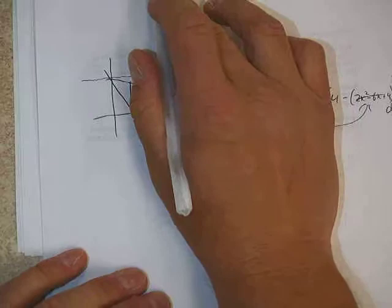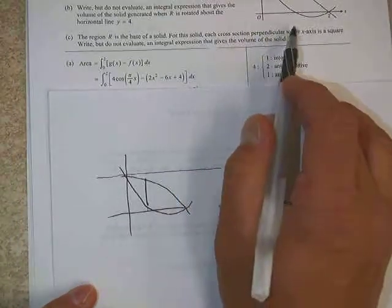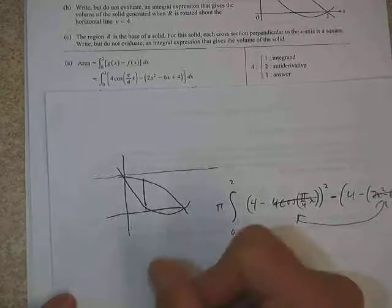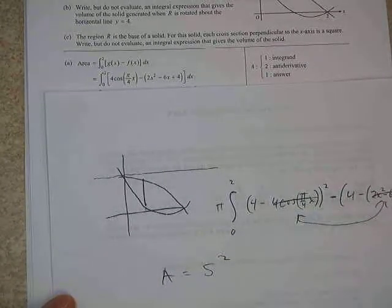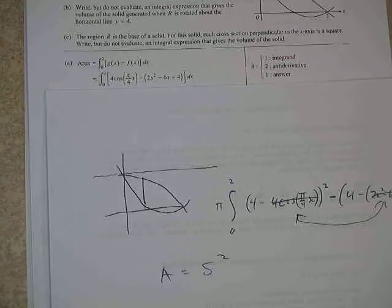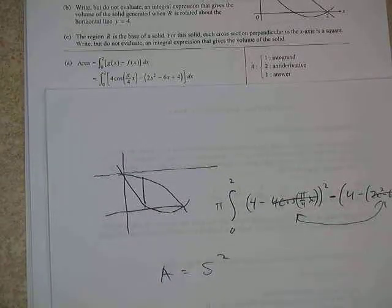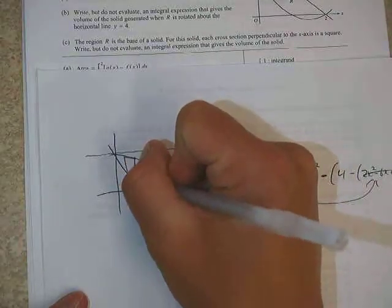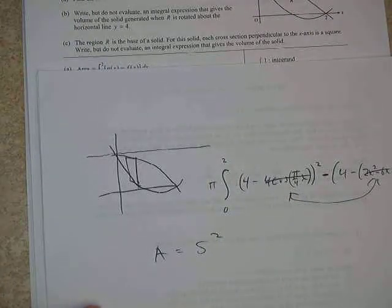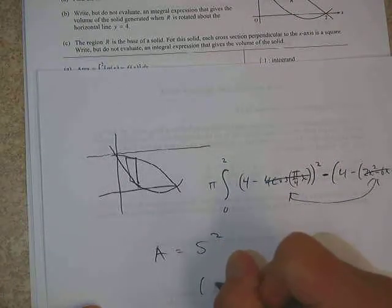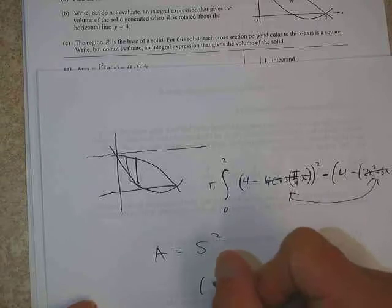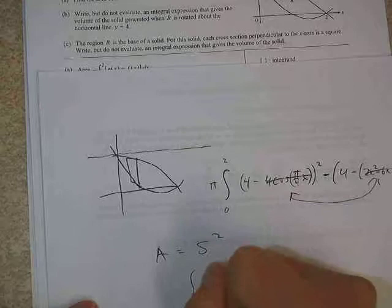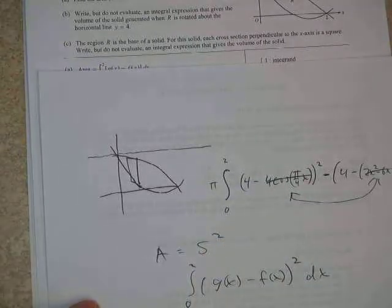All right. And then finally, this time the region is a solid, the base of a solid, and each cross-section that's perpendicular to the x-axis is a square, and we want to write but not evaluate. And again, if it's a square, identify what the shape is. In this case, it's a square, of course, and we need to know if this were to come out of the paper at us as a square, then the area would be S squared. And S here is the top function minus the bottom function. So top function we know as g, bottom function we know as f.